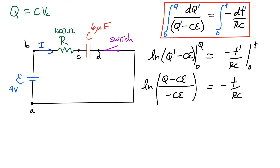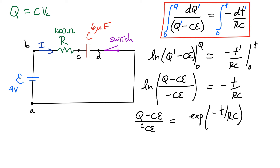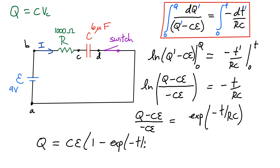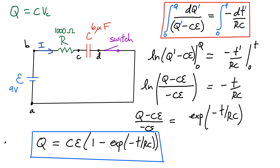My goal is to get Q by itself, so I take the exponential of both sides. The left-hand side simply becomes (Q − C·EMF)/(−C·EMF), getting rid of the natural log. The right-hand side becomes e^(−t/RC). Doing a little bit of algebra — bringing the −C·EMF across — we end up with Q(t) = C·EMF · [1 − e^(−t/RC)]. This is really the end result we're looking for.